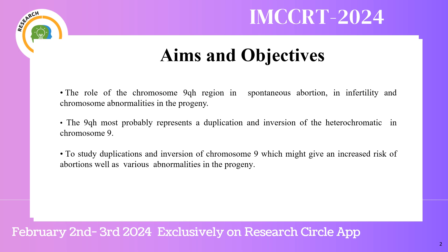Aim and objective: The role of Chromosome 9 QH+ in spontaneous abortion, infertility, and chromosome abnormality in progeny. 9 QH+ most probably represents a duplication and inversion of heterochromatin in Chromosome 9. We aim to study this duplication and inversion which might give an increased risk of abortion as well as various abnormalities in progeny.